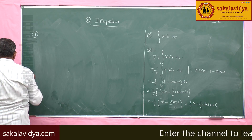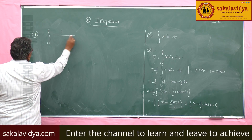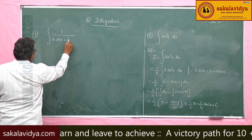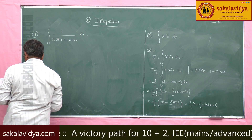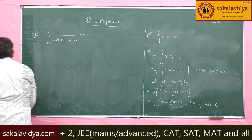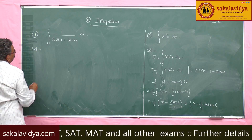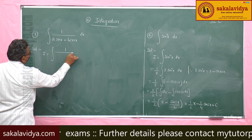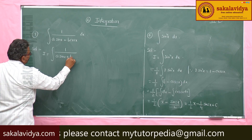Seventh problem: evaluate the integral of 1 divided by (A sin x + B cos x) dx. So, I is equal to the integral of 1 by (A sin x + B cos x) dx.